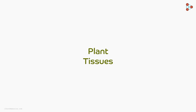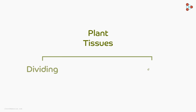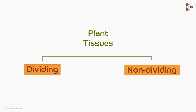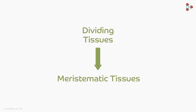In our last video, we studied that plants have two types of tissues — dividing tissues and non-dividing tissues. Now let us look at the technical terms for these tissues. In this lesson, we will look at the former type of tissues. The dividing tissues in plants are known as the meristematic tissues.